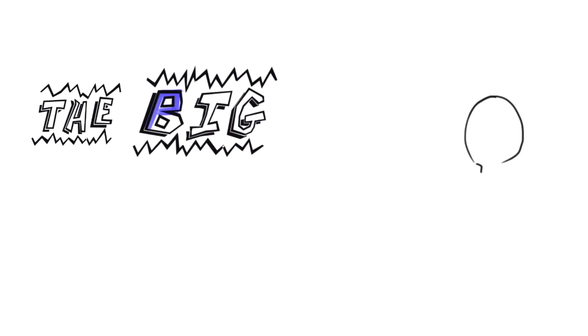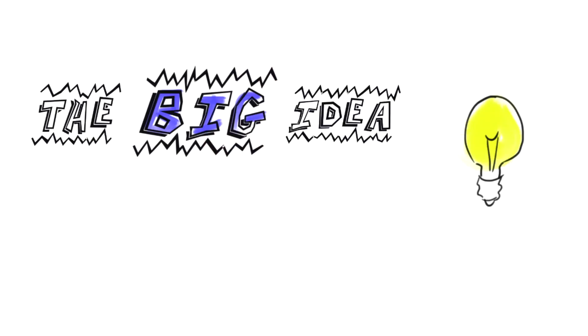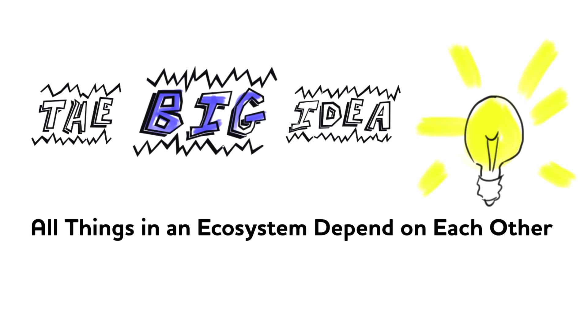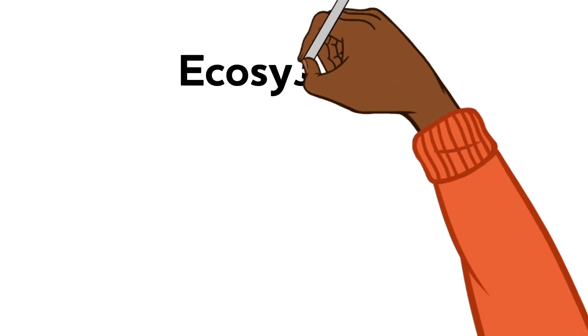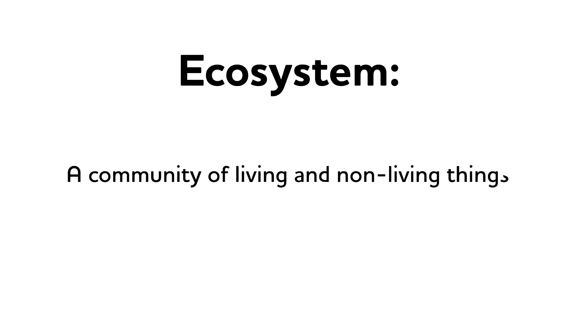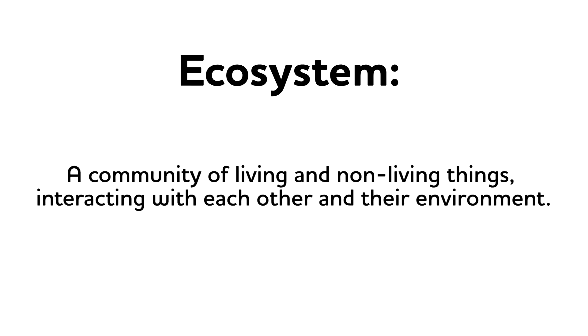Hello friends, welcome back to FoodPrints. I'm so very glad you're here with me because the big idea we're exploring today is all things in an ecosystem depend on each other. So right now you're probably thinking, what is an ecosystem? Good question. An ecosystem is a community of living things and non-living things interacting with each other and their environment.